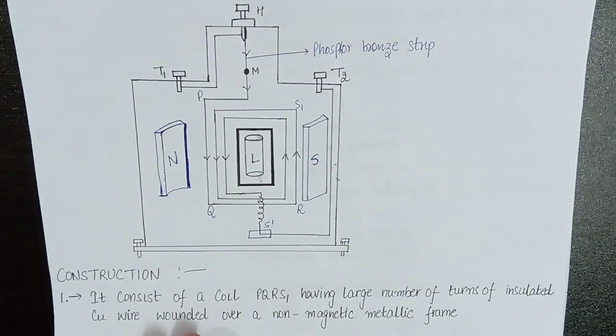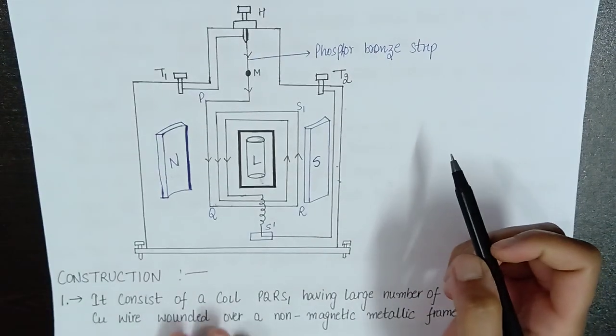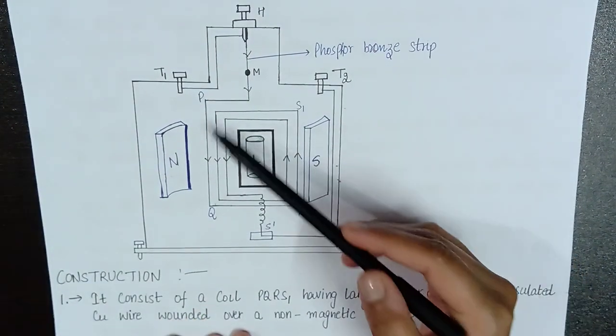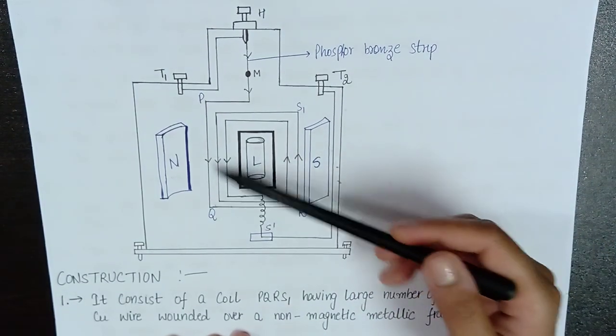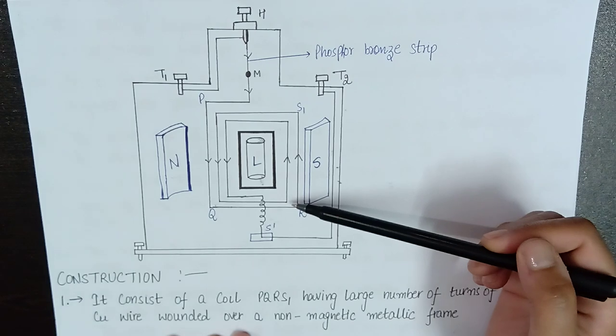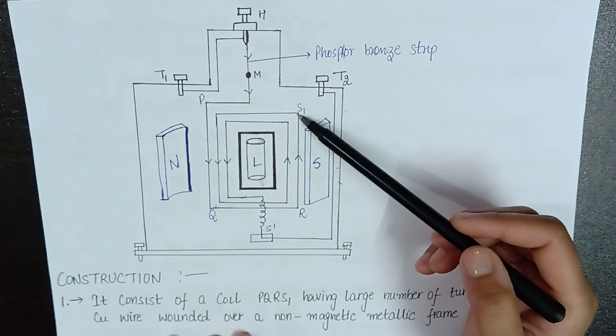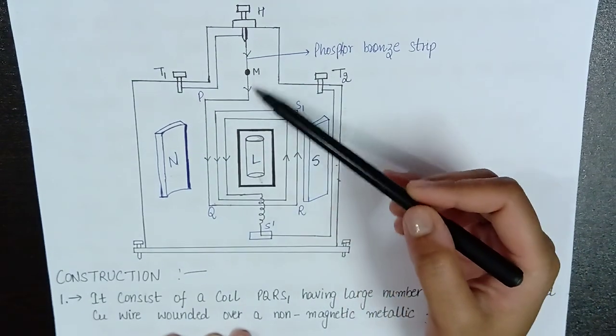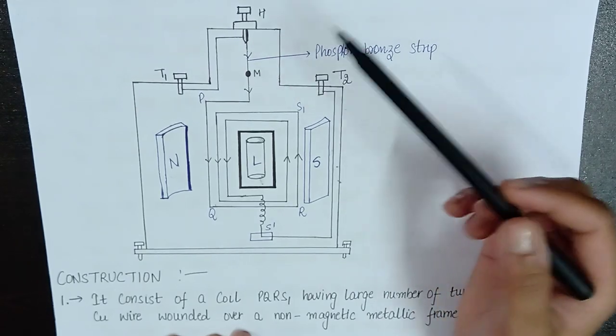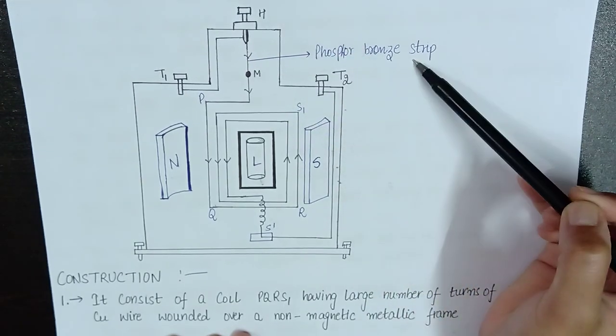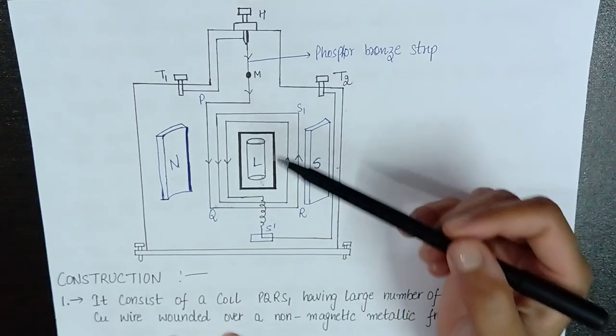So we have this arrangement of moving coil galvanometer. We have this coil PQRS which is having a large number of insulated copper wire bounded over a non-metallic magnetic frame. It is connected to the torsion head H which is capable of moving by means of a phosphorous bronze strip. Here M is a concave mirror which is here to note the deflection of the coil.